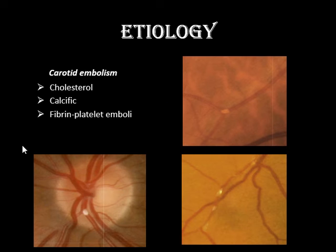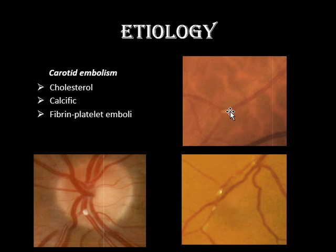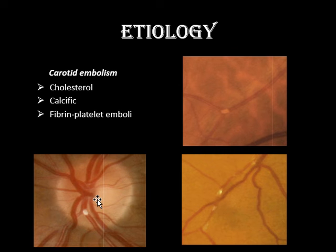These are the different kinds of emboli that can cause retinal arterial occlusion — it can be branch retinal artery occlusion or central retinal artery occlusion. The first type is cholesterol emboli, which are yellowish-white and usually occur at the site of arterial bifurcation. The second is calcific emboli, which are whitish and seen on the optic nerve head. The third is fibrin-platelet emboli, which are elongated; the source is usually the heart, occurring in cases of atrial myxoma, bacterial endocarditis, and valvular heart disease.